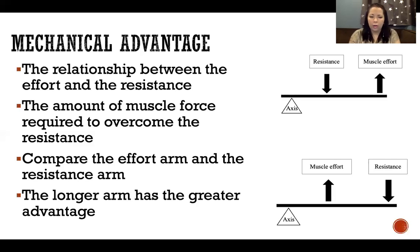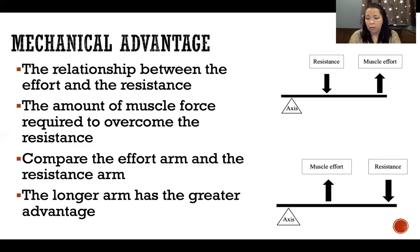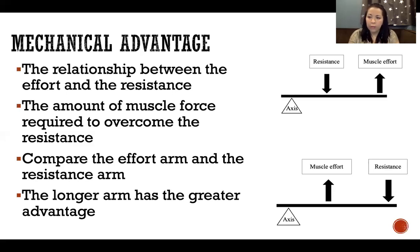The longer arm — whether the effort arm or the resistance arm — will have the greater advantage. In the bottom right diagram, the resistance has the greater advantage because it has a longer arm; the resistance is further from the axis of rotation. This means the muscle has to produce a greater amount of force to overcome the resistance than if the positions were reversed. If the resistance arm were shorter than the muscle arm, the muscle would not have to produce as much force to cause the same movement at that joint.